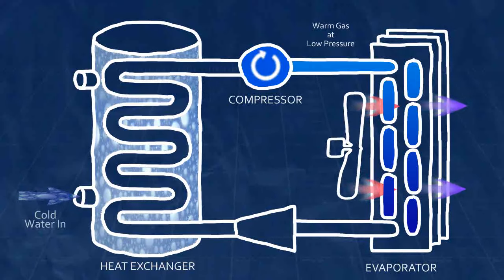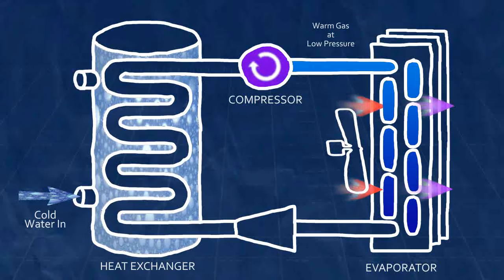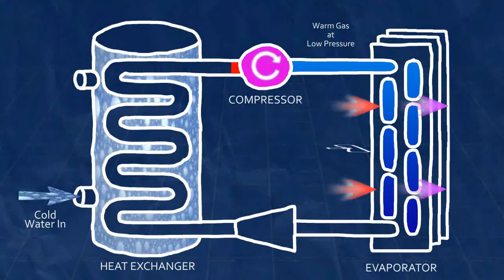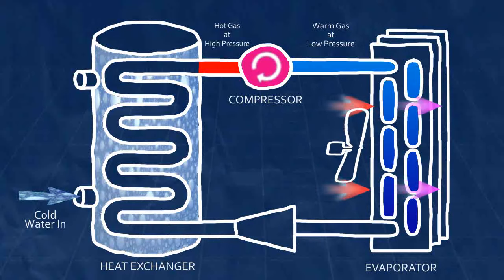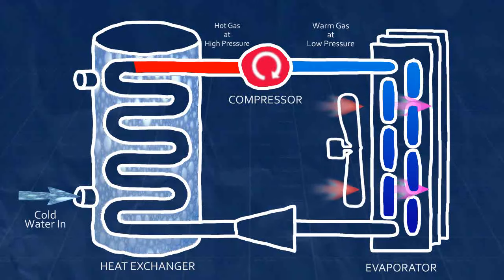Once it's hot enough, the heat will flow from the refrigerant to the water. The compressor next forces the now high temperature, high pressure gas further along the cycle into another heat exchanger called the condenser.